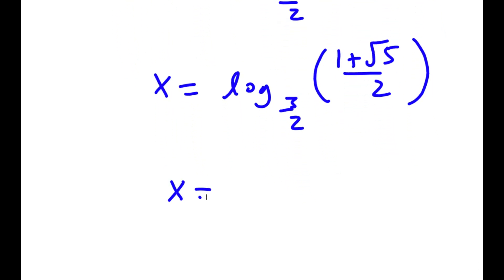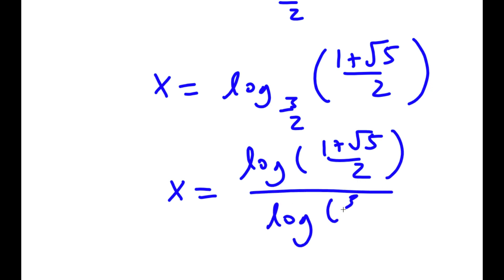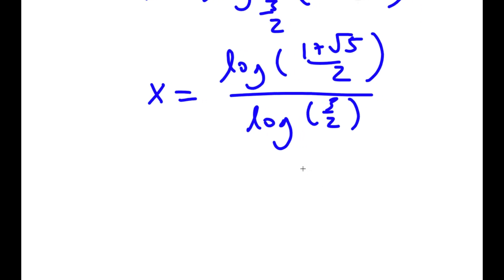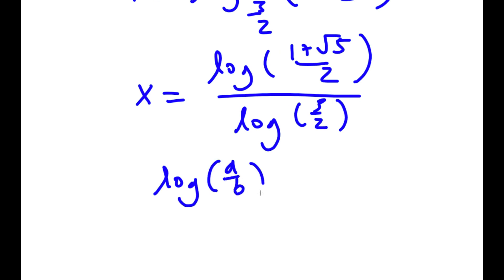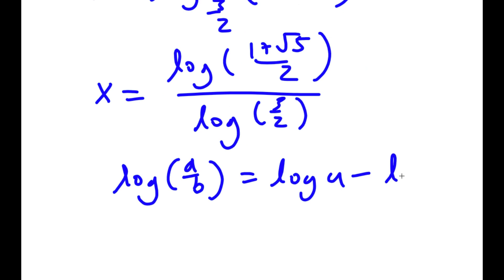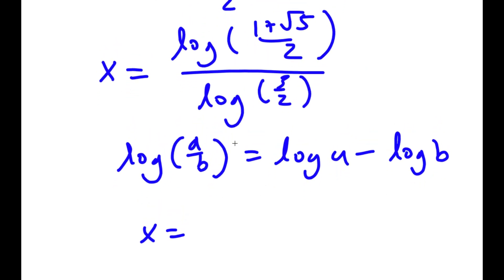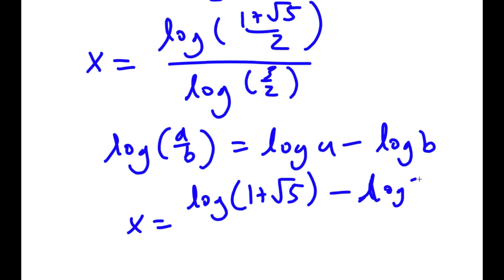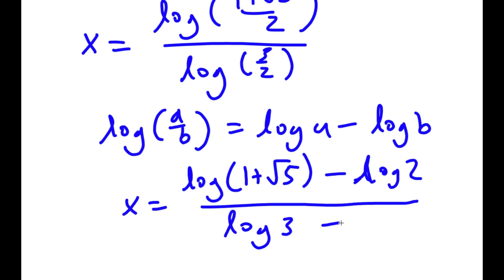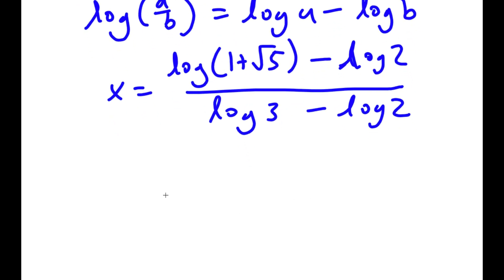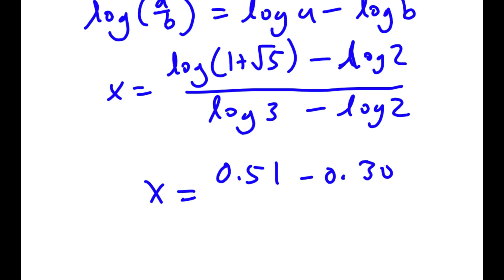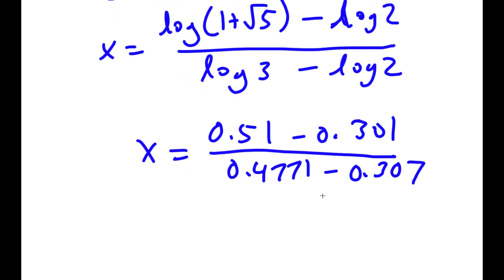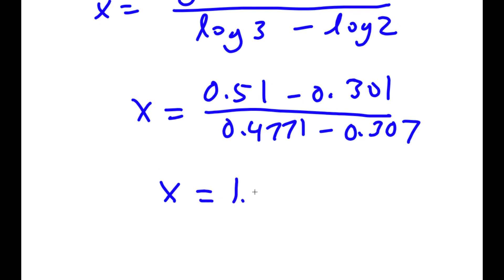This is the same as x equals log of 1 plus the square root of 5 over 2, divided by log of 3 over 2. Using the rule that log(a/b) equals log a minus log b: log of 1 plus the square root of 5 over 2 equals log(1 plus the square root of 5) minus log 2, and log(3 over 2) equals log 3 minus log 2. This evaluates to 0.51 minus 0.301, divided by 0.4771 minus 0.301, giving x equals approximately 1.868.